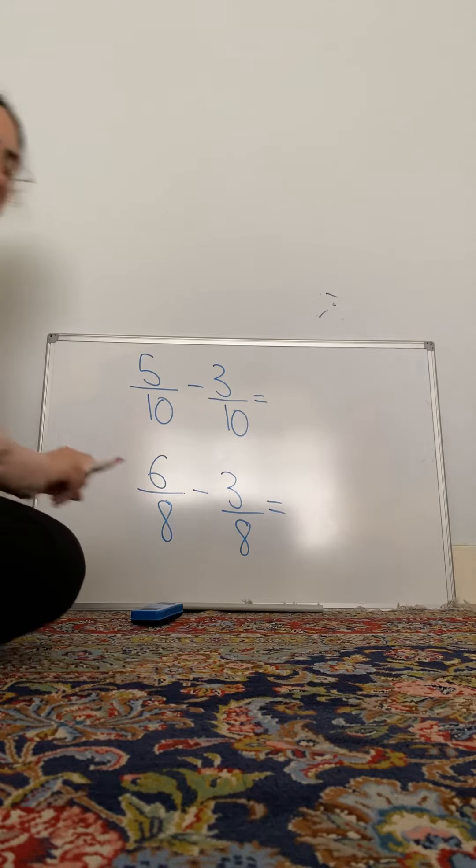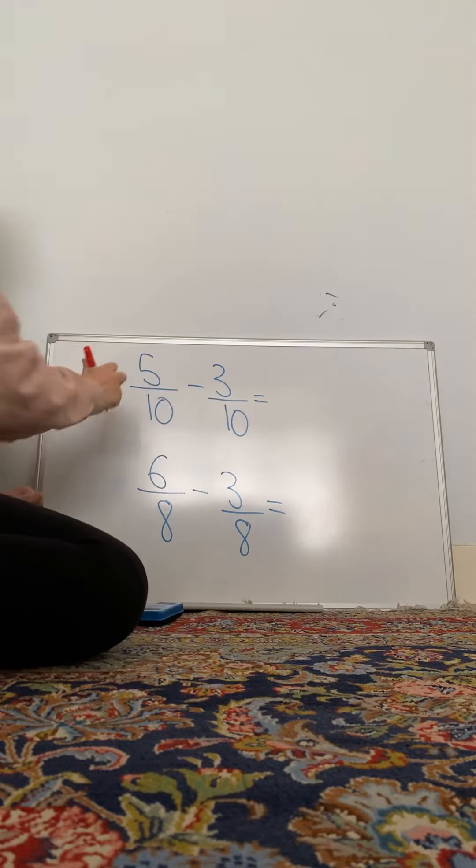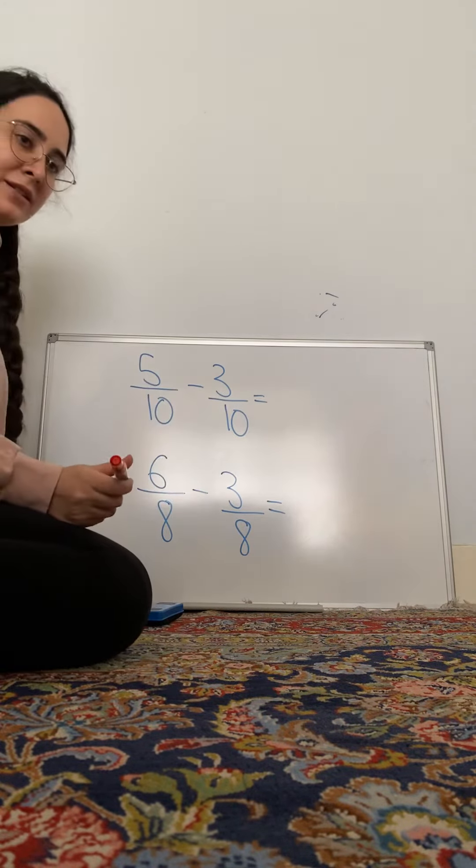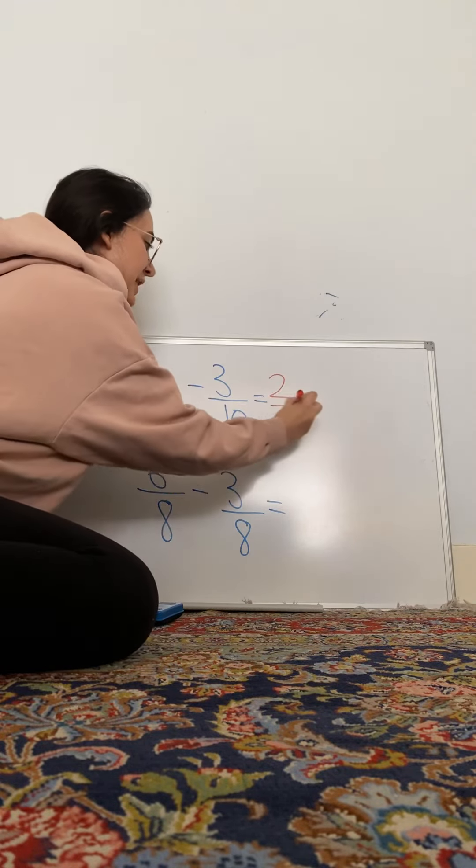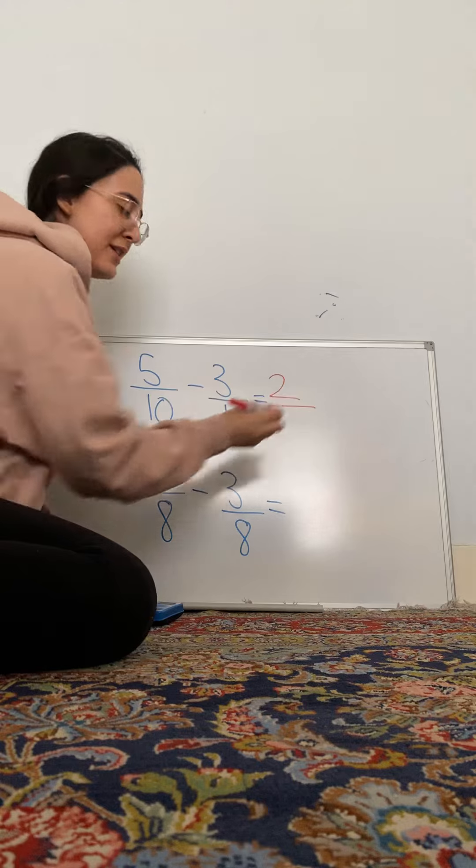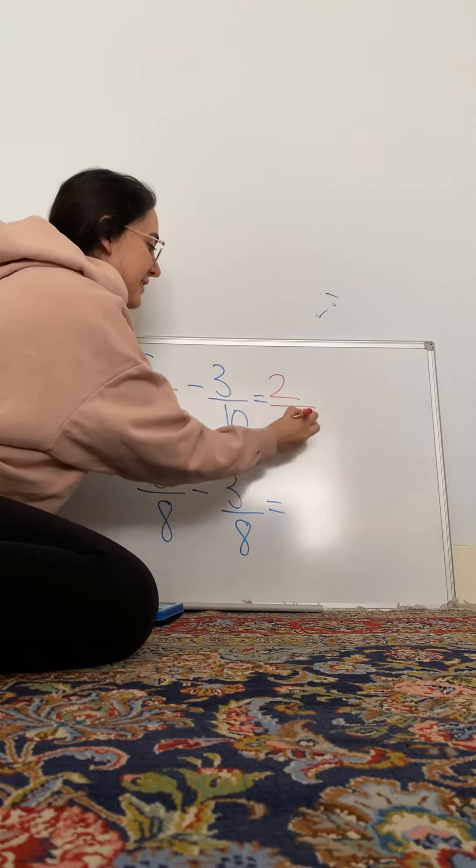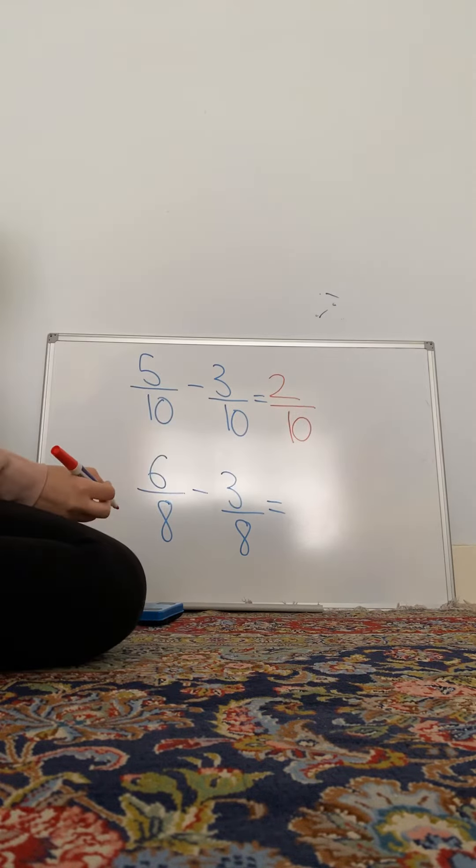Okay, so 5 take away 3 is? Good, is 2. And our denominator, good, stays the same. Right, the next one.